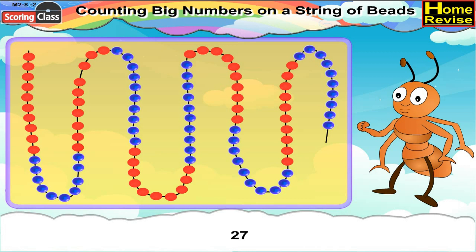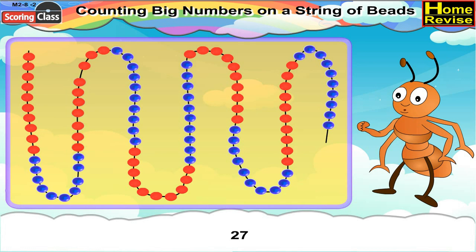Number 27. For number 27, first we will count the 10 red beads, followed by 10 blue beads. Then 7 red beads and place the clip after 7 red beads. And this is your number 27.